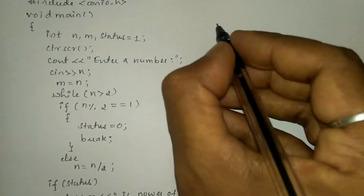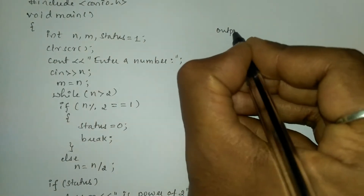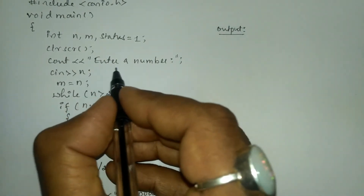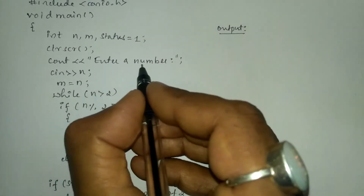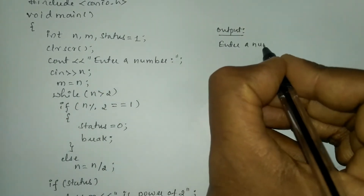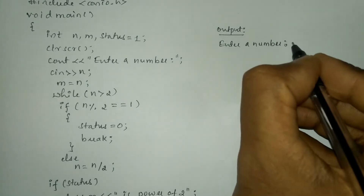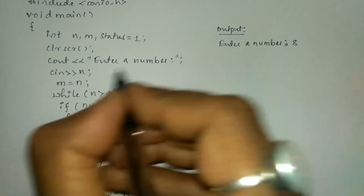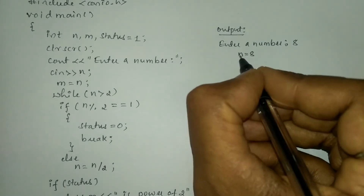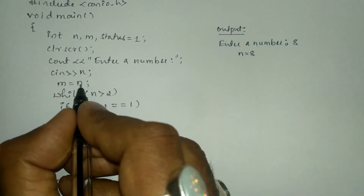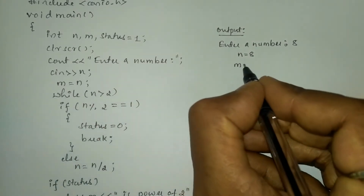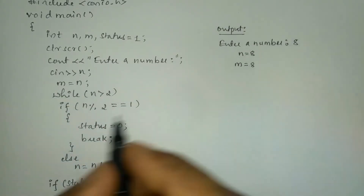Now let us take an example. Once we compile and run this program it will ask the user to enter a number. I will write "enter a number" and here I am going to enter for example 8. So the value 8 is stored in n, and in turn n saves its value in m, so m is equal to 8.